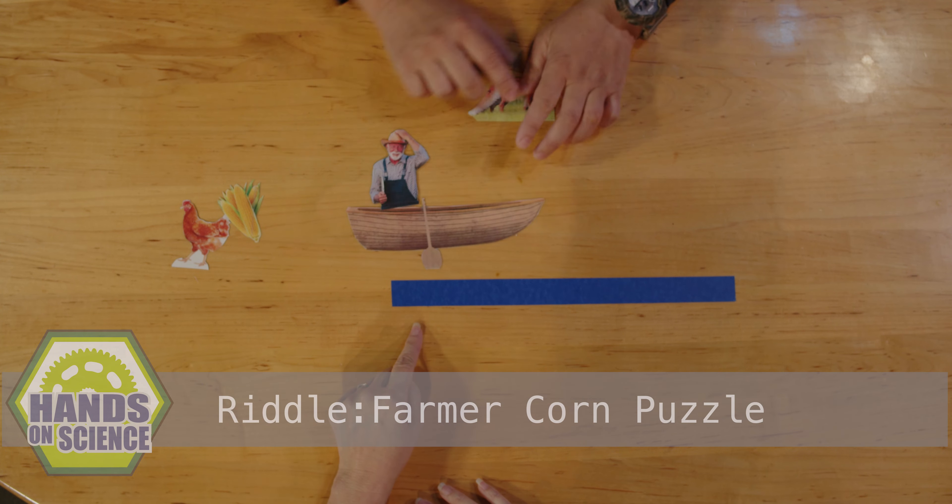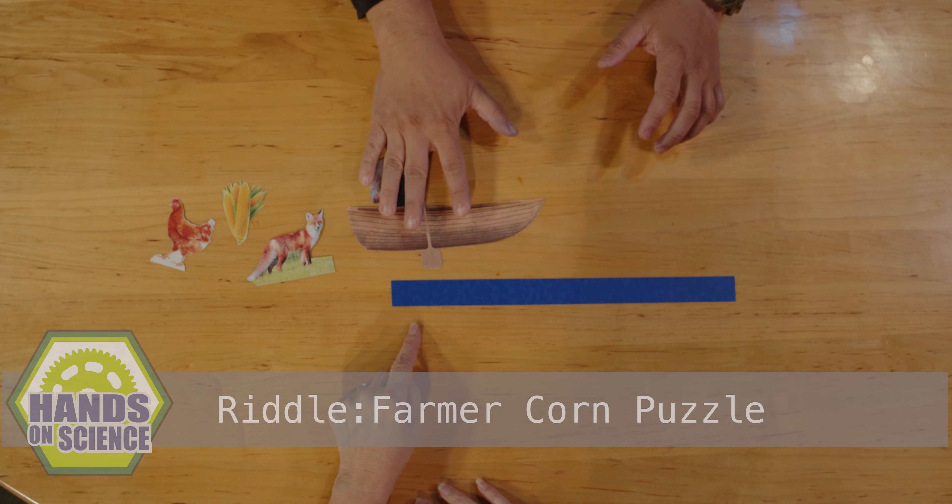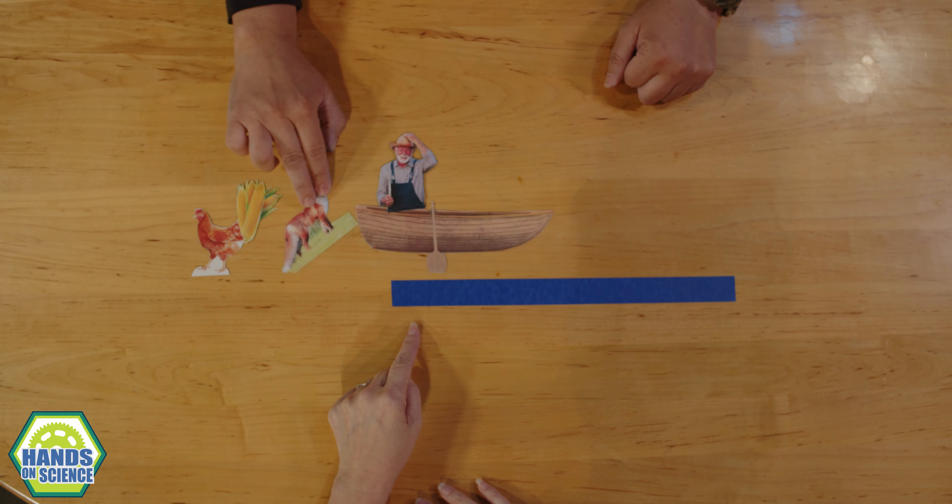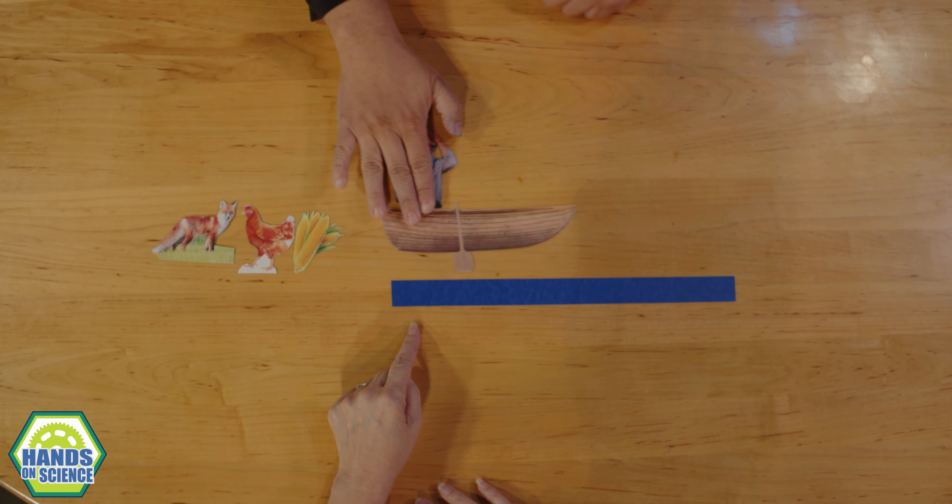So, to get all three of these items across the river, you have to figure out which order the farmer needs to take them. Because if the farmer takes the corn first, the fox is going to eat the chicken. And if the farmer takes the fox first, the chicken is going to eat the corn.